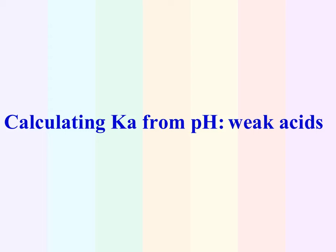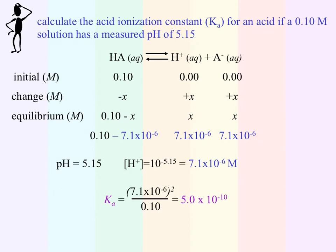We're going to look at some additional types of calculations we can use with respect to Ka and pH when dealing with weak acids. They're asking us to calculate the acid ionization constant, the Ka, for an acid if a 0.10 molar solution has a measured pH of 5.15. So now instead of starting with our Ka value, we're finding our Ka value from our pH and our known initial concentration.